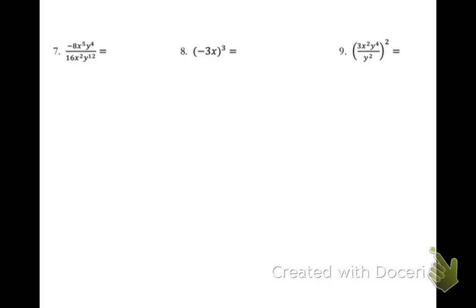All right, let's look at number 7. So now we're going to start with our numbers, negative 8 divided by 16. So we'll just reduce that fraction. That'll be a negative 1/2. Now we'll combine our x variables.